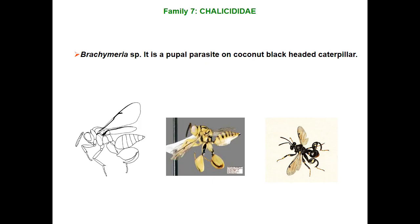Next family is Chalcididae. They are small to medium-sized insects. The hind coxae are 5 to 6 times larger than the fore coxae — a special peculiar character. The hind tibial spur is also larger than the mid tibial spur. The hind femora are large with a row of short teeth beneath. Wing venation is reduced. The ovipositor is very short and straight. Best example is Brachymeria, which is a pupal parasite.